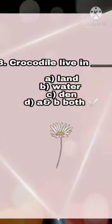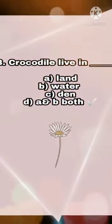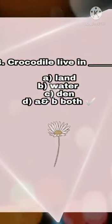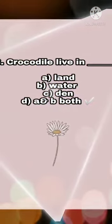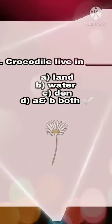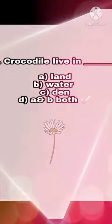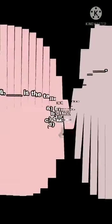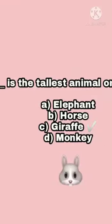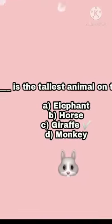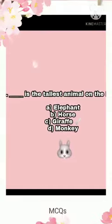Question three: Crocodile lives in dash — land, water, den, or A and B both? The answer is A and B both. A crocodile lives on land and in water.